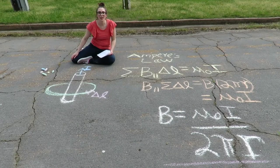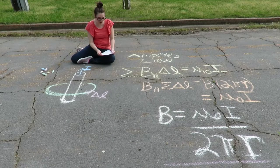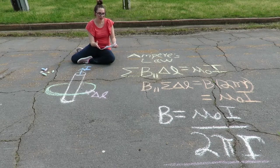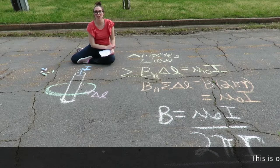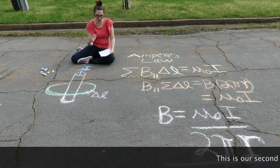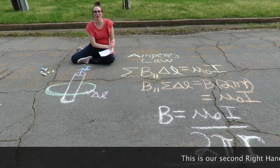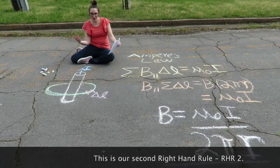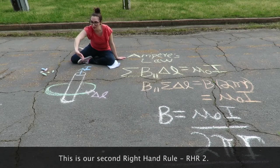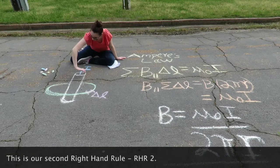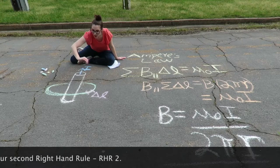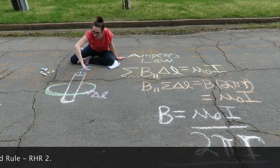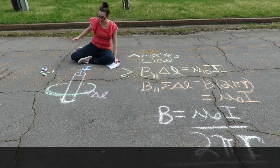Let's talk about the magnetic fields created by currents. A magnetic field is created by a current and we can use a second formulation of the right-hand rule to find the direction of this magnetic field. If we have a wire with a current running through it, we take our thumb of our right hand and put it in the direction of the current, and then our fingers curl around that wire in the direction of the magnetic field.